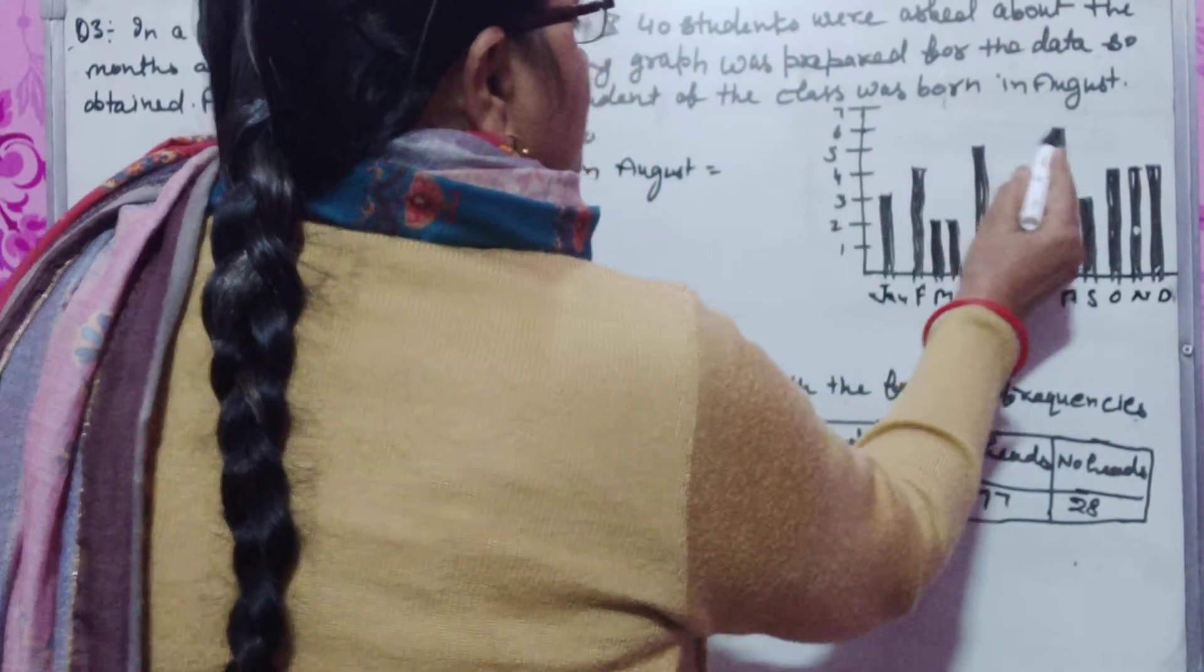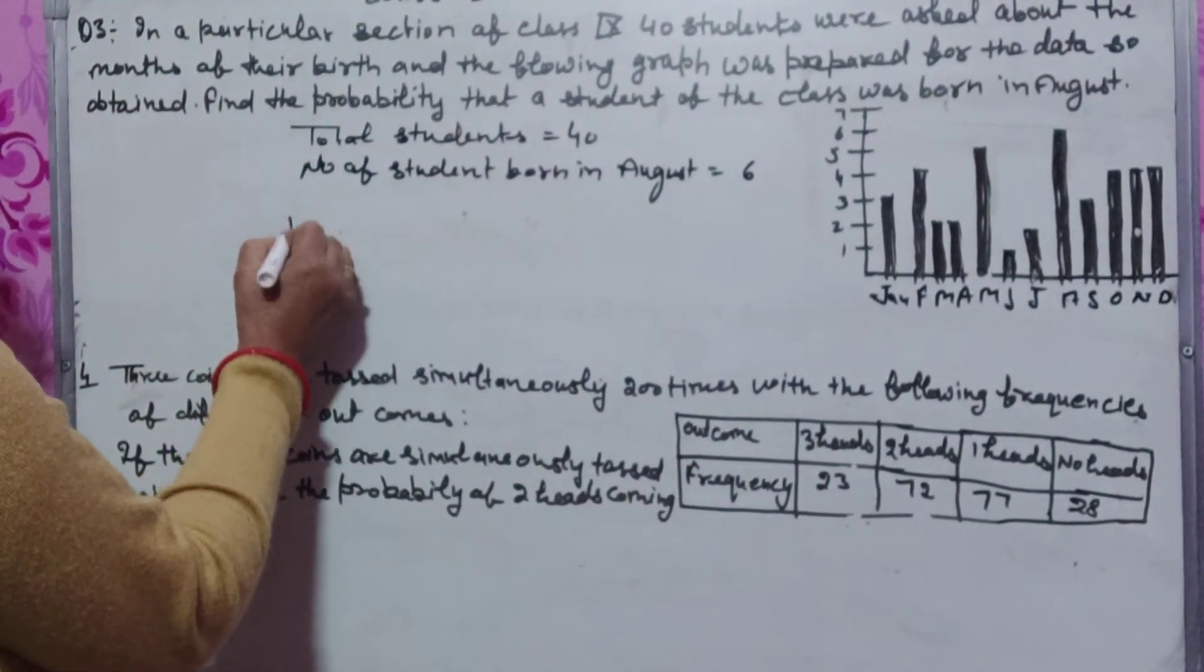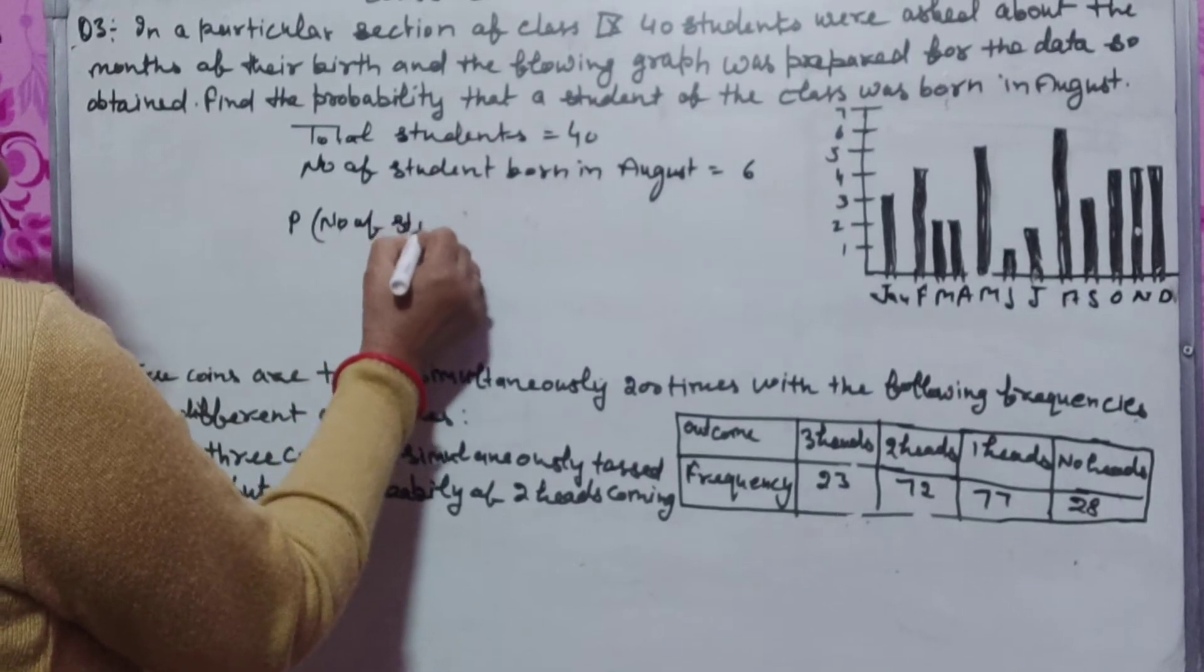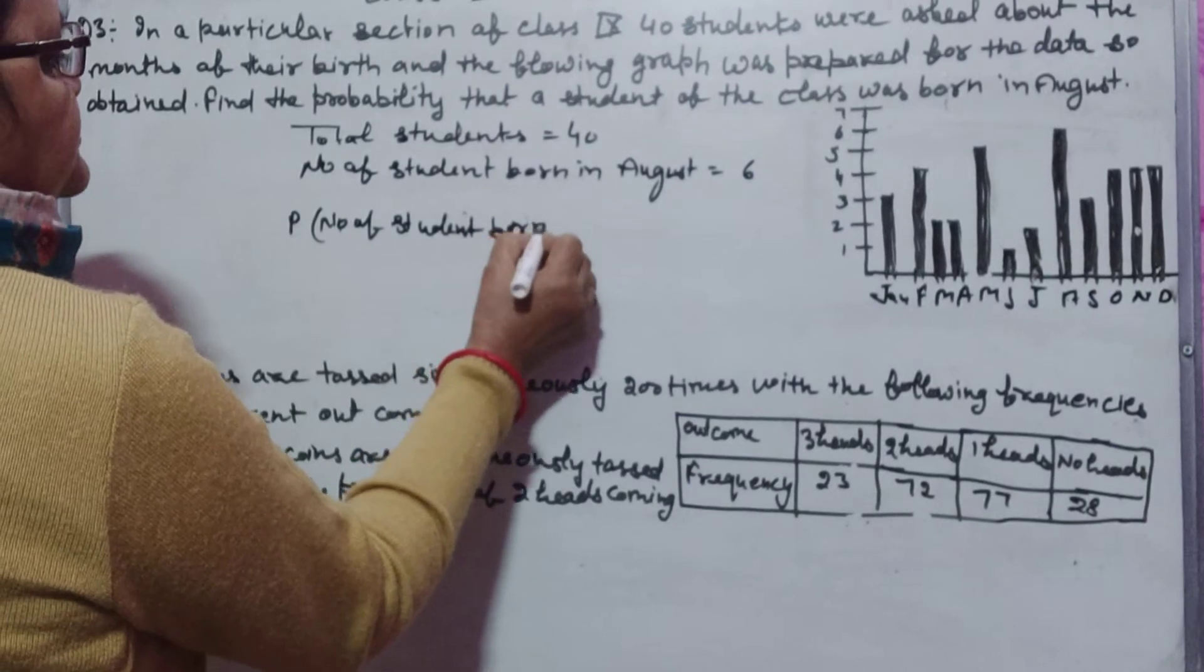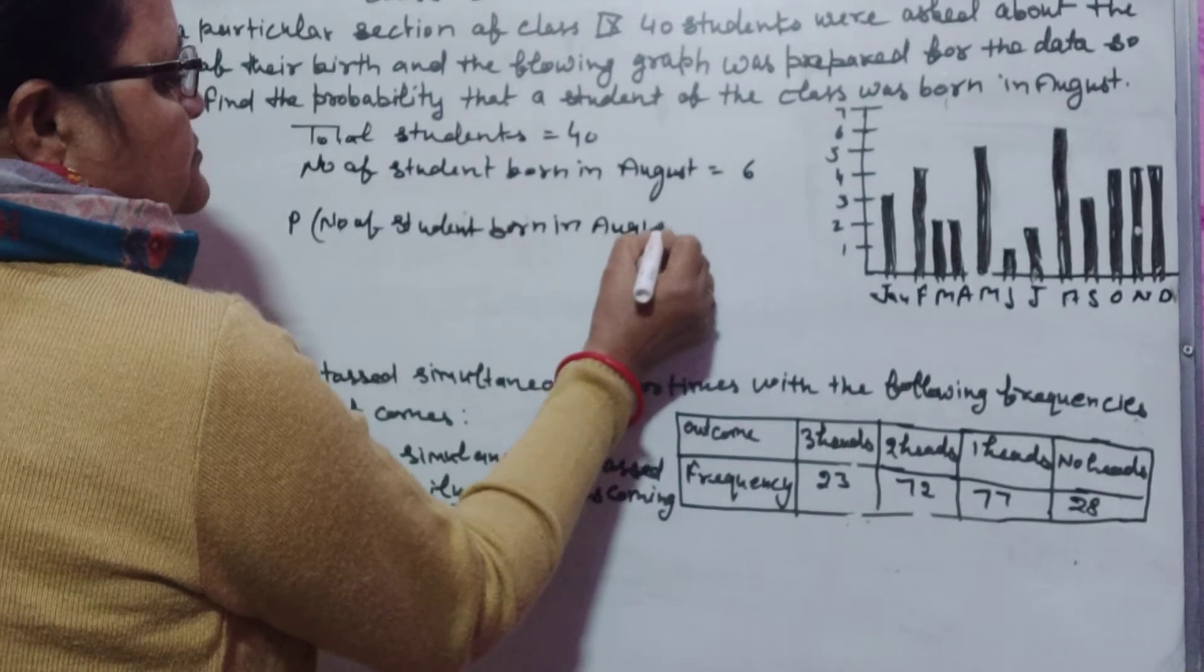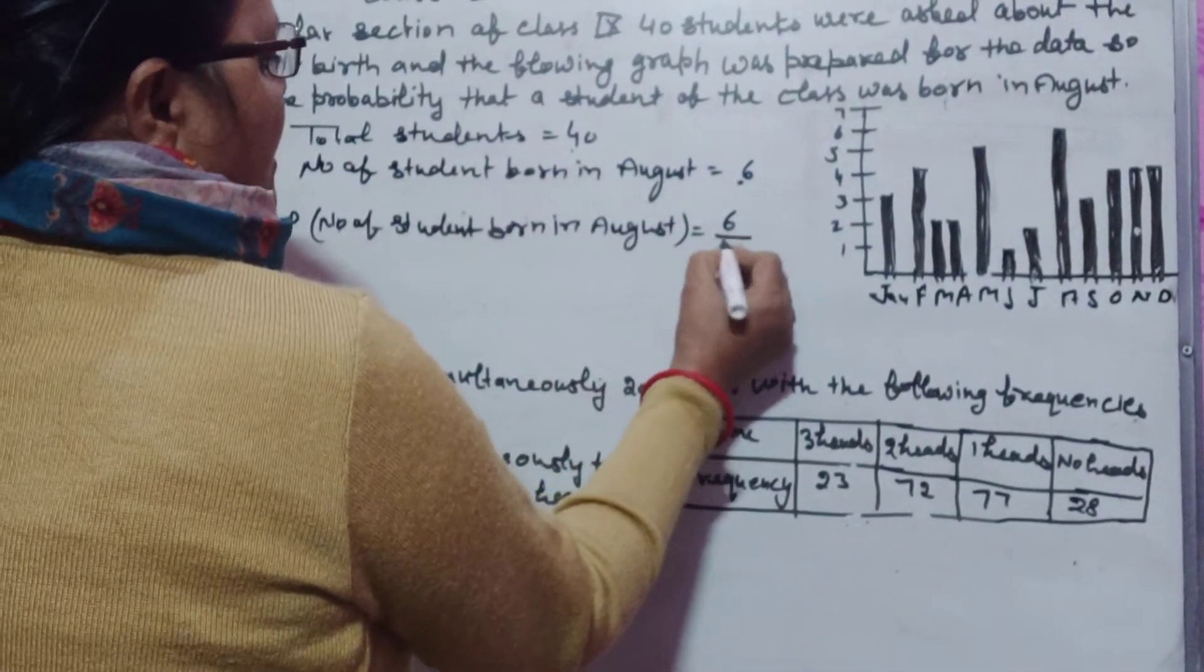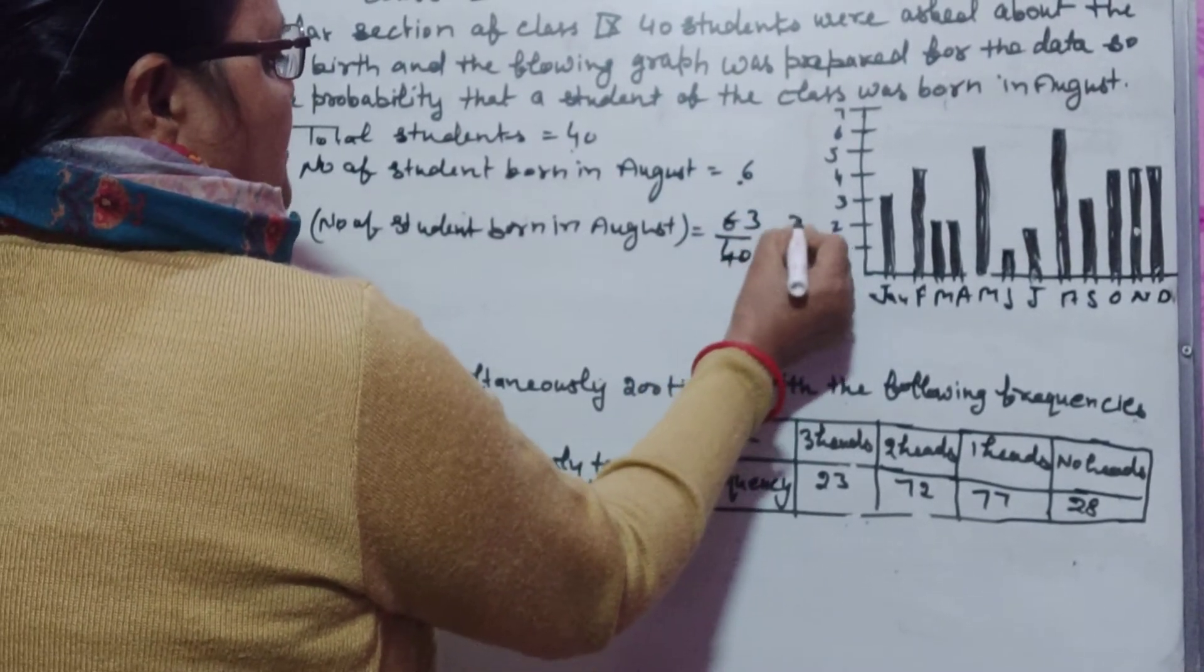August mein hamar paas 6 students hai. Probability, number of students born in August, 6. Total students hai hamar paas 40. 6 by 40 equals 3 by 20.